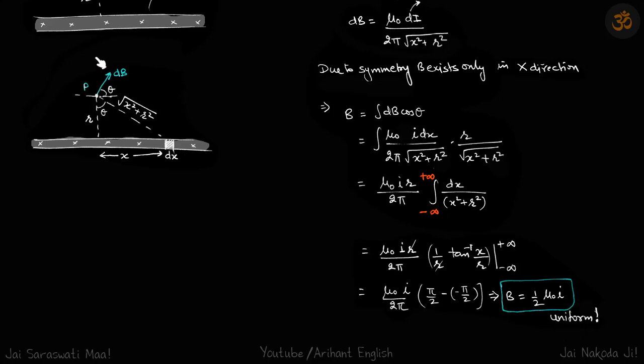It doesn't matter at what distance R you want to find the field. If you have an infinite sheet, at all points the magnetic field will be μ₀i/2. That is our answer.